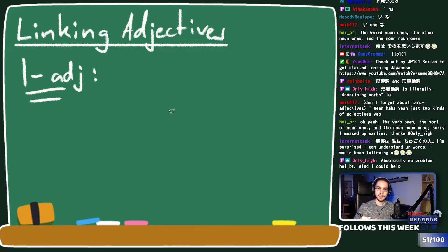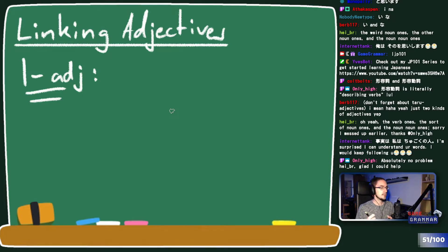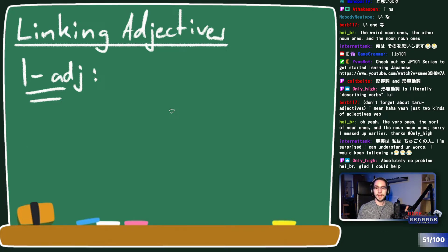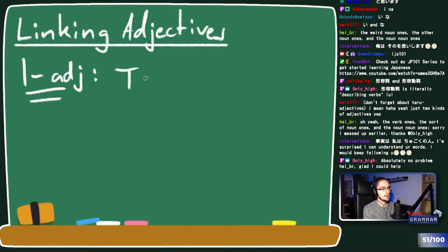If we wanted a verb afterwards we would have to look into adverbs, but that's for another lesson. For now, using the te-form of adjectives we can link up another adjective, which is really useful because sometimes we want to say something is green and round and large and friendly. Sometimes we want a noun with multiple properties and we don't always want to start a new sentence.